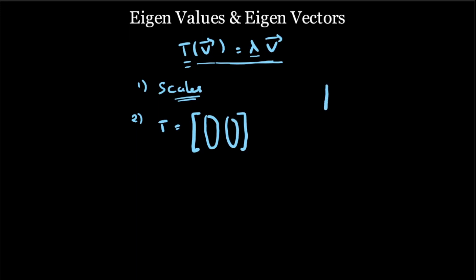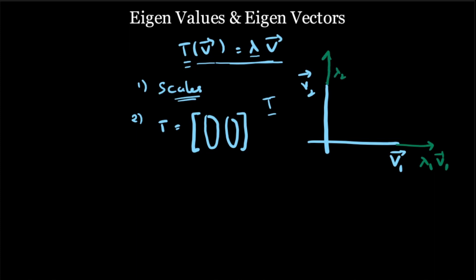Now let us assume a simple two-dimensional coordinate system with two basis vectors V1 and V2, and assume that these two basis vectors V1 and V2 are the eigenvectors of the transformation T. When this transformation is applied, all that happens is V1 becomes λ1·V1 and V2 becomes λ2·V2. The transformation matrix in this new coordinate system is therefore [λ1, 0; 0, λ2].